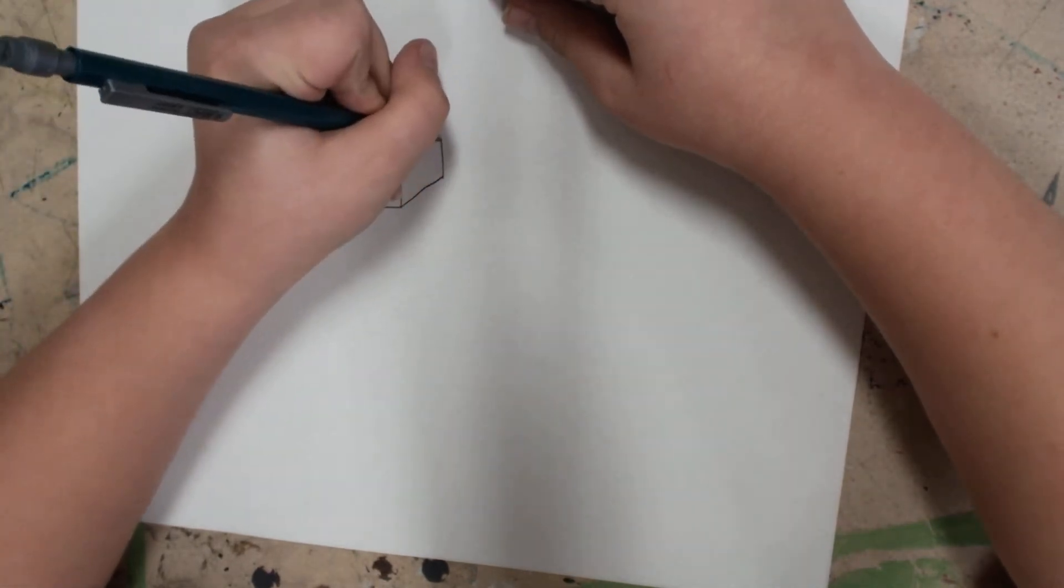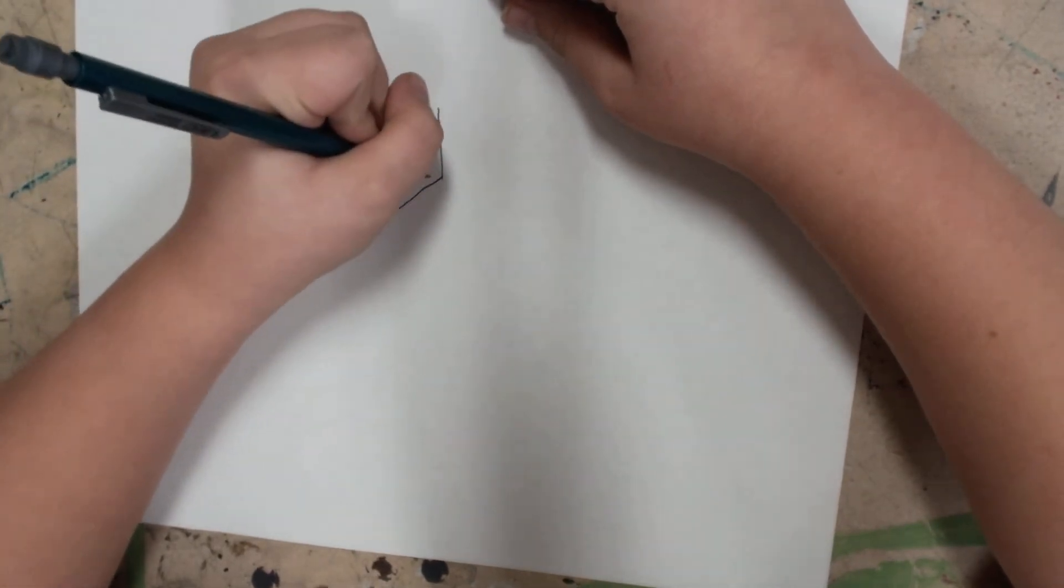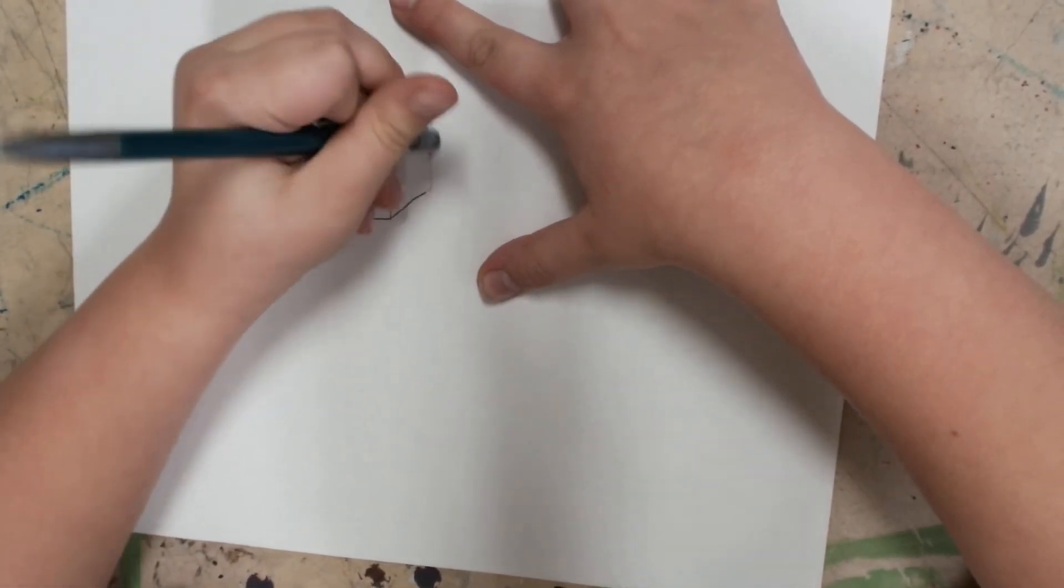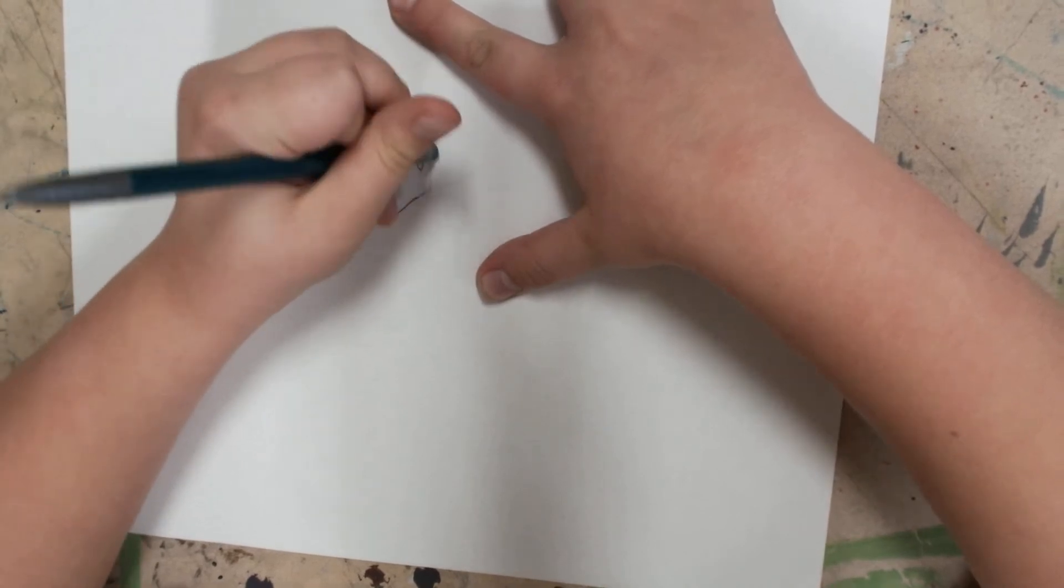Then a straight line. If it looks too big, then just make the lines a little bit shorter.